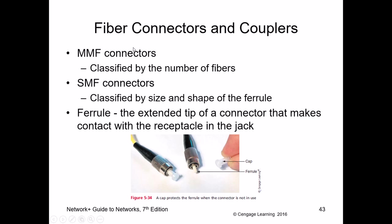Fiber optic connectors vary — common types include Straight Tip (ST) and Subscriber Connector (SC). When taking exams, you need to recognize connector types and identify whether they're for fiber, coax, or twisted pair. One important note: fiber optic data connections are always full duplex — one cable dedicated for transmission and another for receiving, running simultaneously. That's why fiber achieves very high bandwidth.